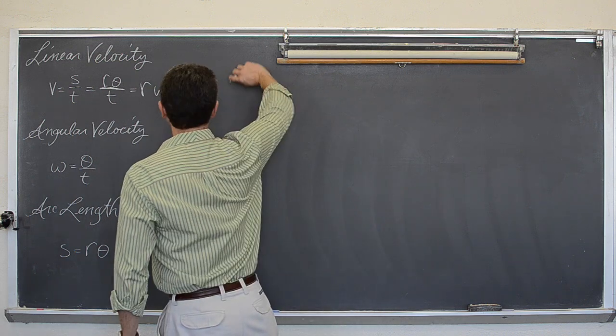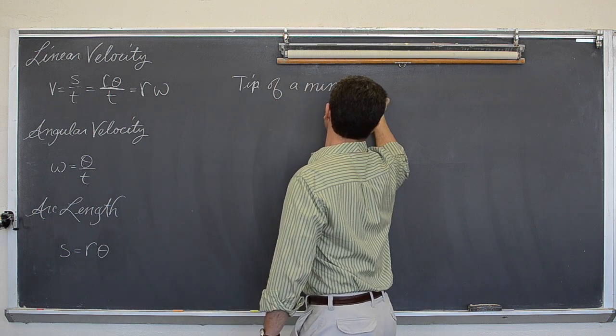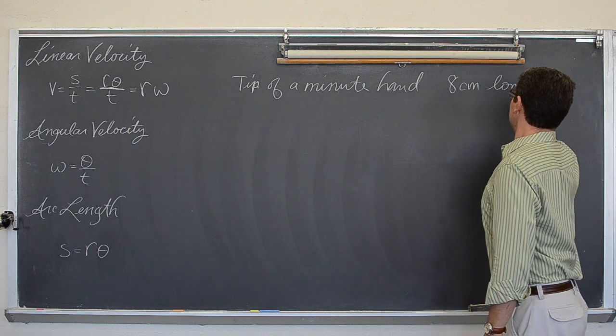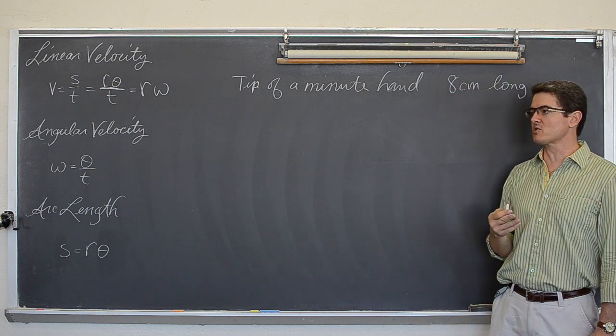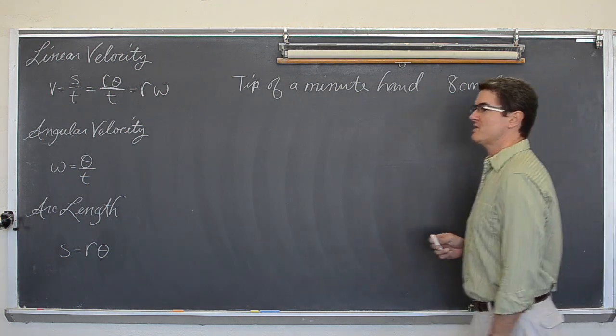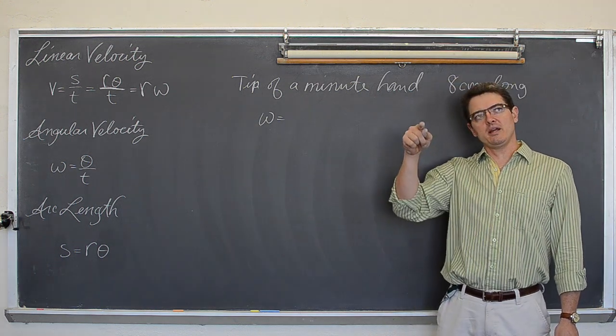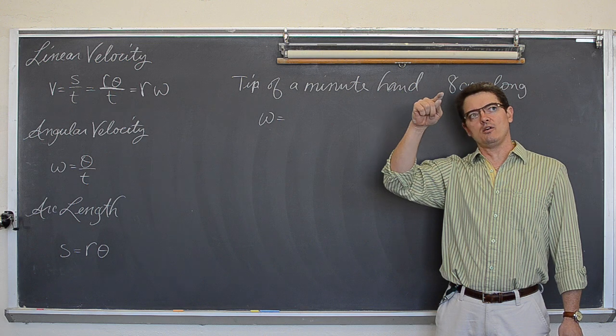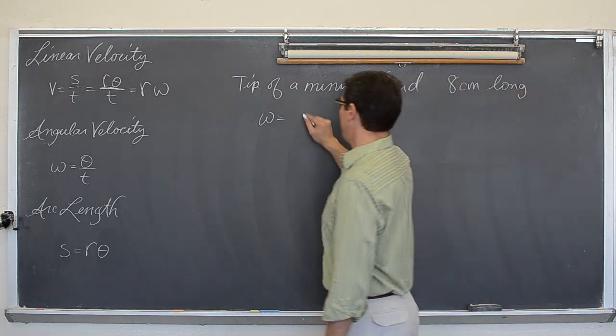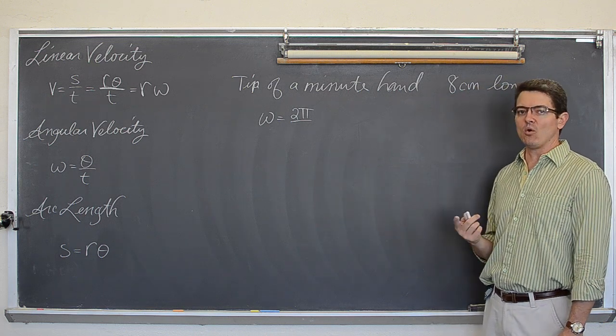Linear velocity. So let's talk about the tip of a minute hand that is 8 centimeters long. You know the long hand of a clock, the minute hand. The one that goes around a little bit quicker than the shorter hour hand. So what would be the, let's do actually, let's do both. Let's do the angular velocity of a minute hand. Well, how long does it take for a minute to go all the way around the clock? Well, from 12, 1, 2, 3, 4, 5, 6, 7, 8, 9, 10, 11, and back to 12 o'clock. That full rotation of 2π takes a total of, well it is a minute hand, so it goes all the way around every hour or every 60 minutes.